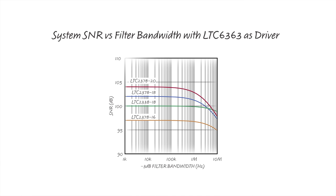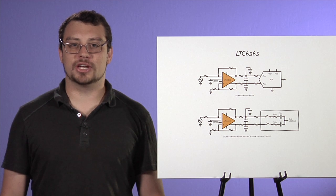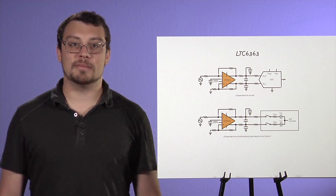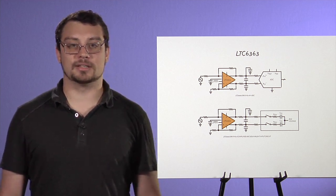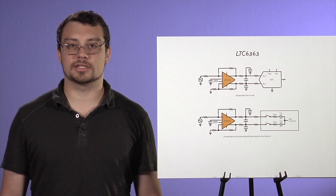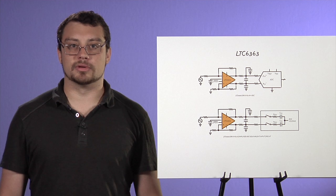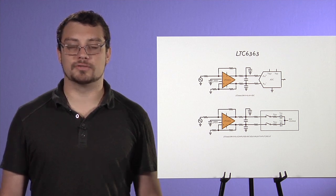This trade-off between bandwidth and SNR can be estimated for a number of linear precision ADCs. Clearly, the amount of deterioration depends on the filter, the amp, and the ADC. Of course, if the signal is being oversampled, then additional digital filtering can also increase the signal SNR without further adjusting the RC filter. This will be useful to remember in the next step as I demonstrate the system distortion versus filter bandwidth.